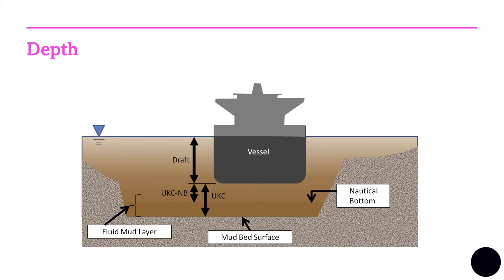The navigable depth is a term used to describe the physical level in a waterway with a muddy waterbed where ships can still safely maneuver. It is the vertical distance from the water's surface to the seabed. It must be sufficient for the vessel's draft — the distance from the waterline to the lowest point of the ship's hull — and takes into account tide variations, silt buildup, and seasonal changes.